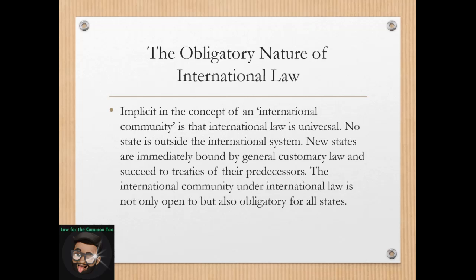That is the weakness of international law. If a particular state fails in or reneges on its obligations under a treaty, convention, or customary law, how do you punish and sanction this particular state when there is no sanctioning body, no sovereign authority to do so? That is one of the weaknesses of international law — unlike in domestic law, where the government enforces rules and provides sanctions for non-compliance.